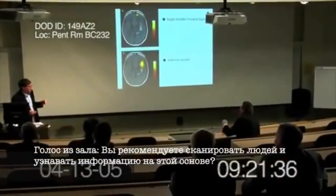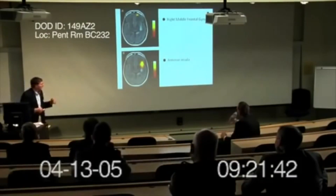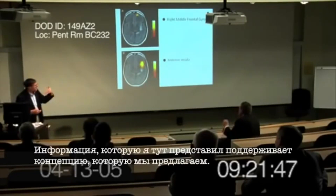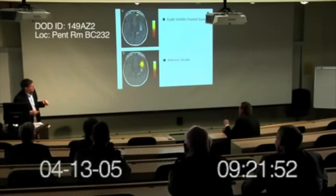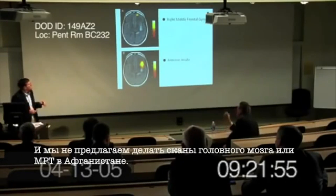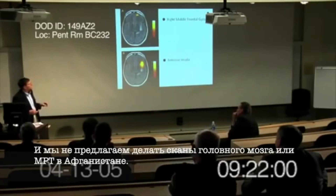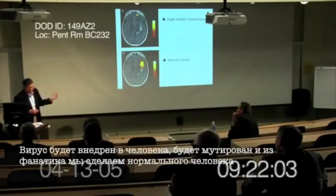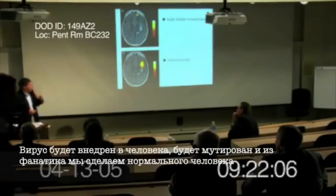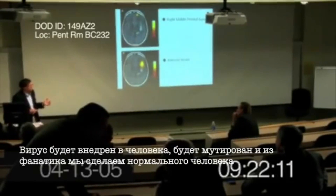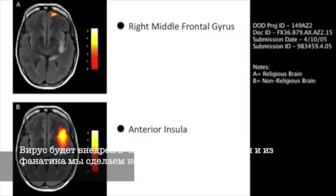Are you suggesting I take a CT scan with me when I'm evaluating people to determine whether I put a bullet in their head? The data that I'm presenting here supports the concept that we're proposing. We would not propose to do CT scans or fMRIs on individuals out in the hinterlands of Afghanistan. The virus would immunize against this VMAT2 gene, and that would have the effect of essentially turning a fanatic into a normal person.